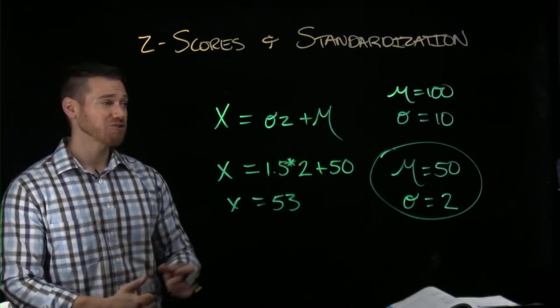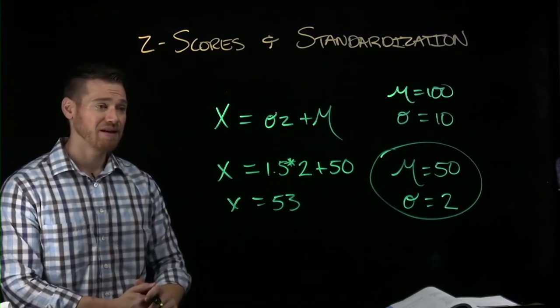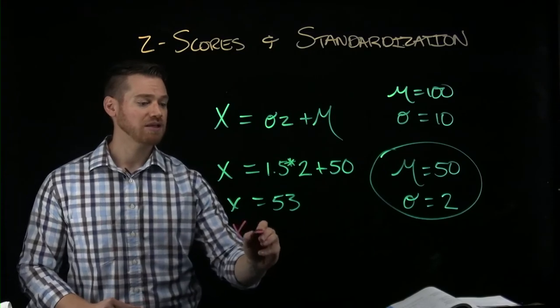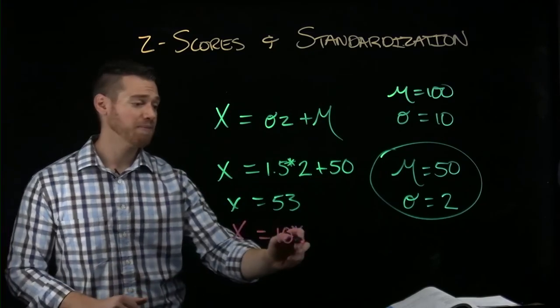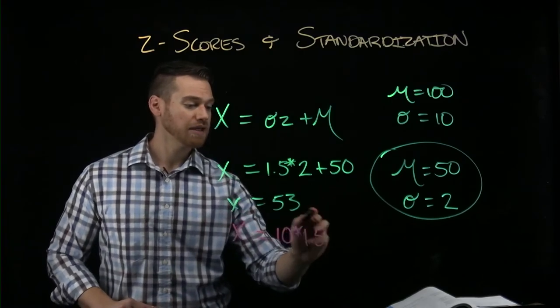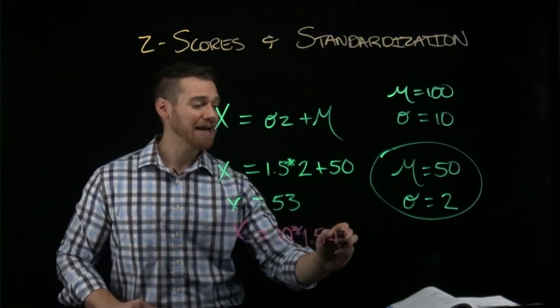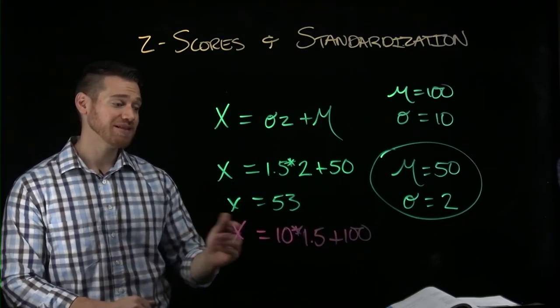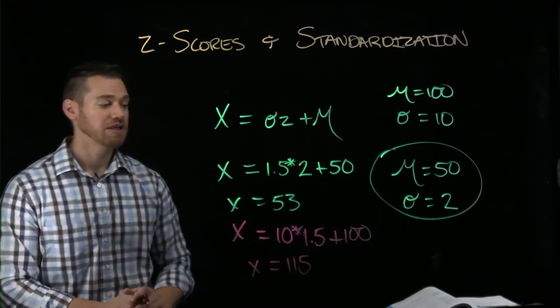Now we could also find easily that Z score in the distribution of 110. And if we wanted to do that, we can use a new color here. We would have X equals, and now we want the standard deviation to be 10 and our Z score here of 1.5. And so we're going to add that to our mean of 100. And so in this case, we're going to get the X in this distribution is 115.